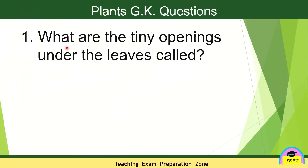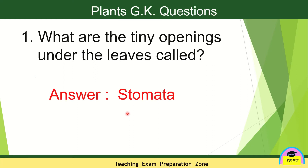The question is: what are the tiny openings under the leaves called? The answer is stomata. Stomata are the tiny openings or tiny pores on the leaves which help to breathe. Stomata helps in exchange of gases.